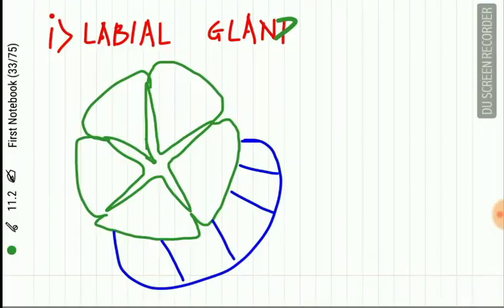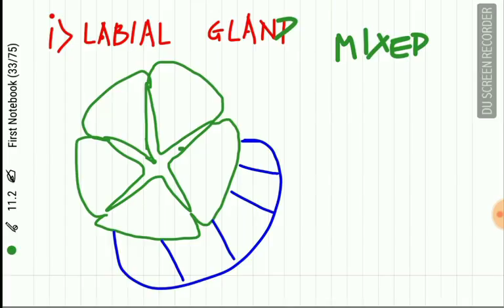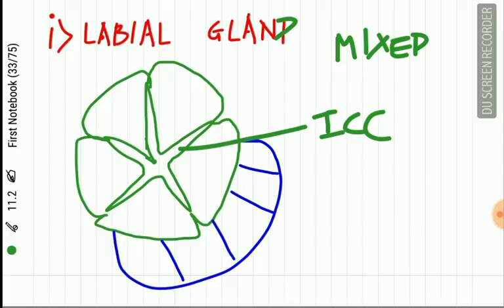The labial gland is a mixed gland containing both serous and mucus acini, with numerous demilunes. The mucus acini show presence of intercellular canaliculi. The intercalated duct in the labial gland is variable in length.